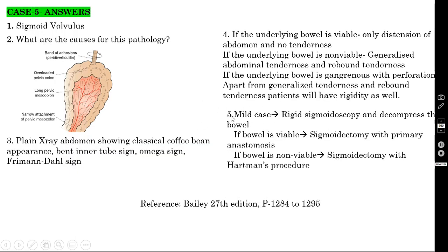What is the treatment? If it is a mild case where the bowel is still viable and the patient is an inpatient, you can perform rigid sigmoidoscopy to untwist the bowel and decompress the proximal bowel. If the bowel is viable, you should normally do sigmoidectomy with primary anastomosis as an elective surgery with prepared bowel. Nowadays we no longer perform sigmoidopexy.